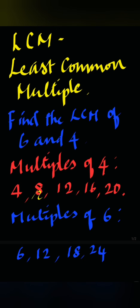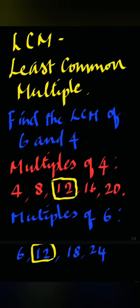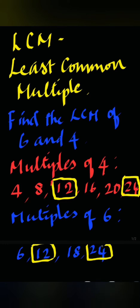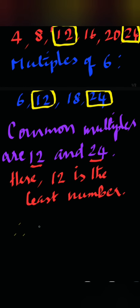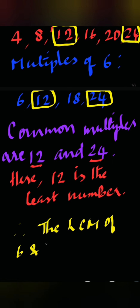So the least common multiple. Common multiples of 4 and 6 are 12 and 24. Here 12 is the least number. So the LCM of 6 and 4 is 12.